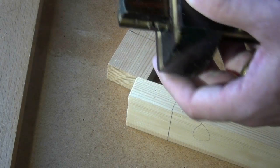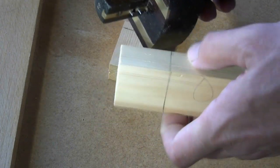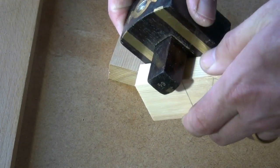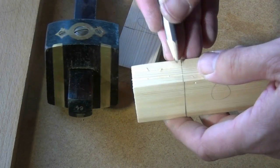With the mortise gauge offset set to put the pins in the center of our component, we can now mark the widths. If I run a pencil down that, you'll better see what I've done.